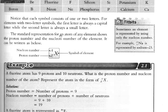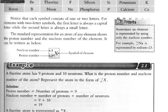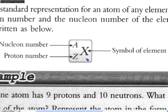The standard representation for an atom of any element shows the proton number and the nucleon number of the element. It can be written as shown below. X represents the symbol of the element, A the nucleon number, and Z the proton number.